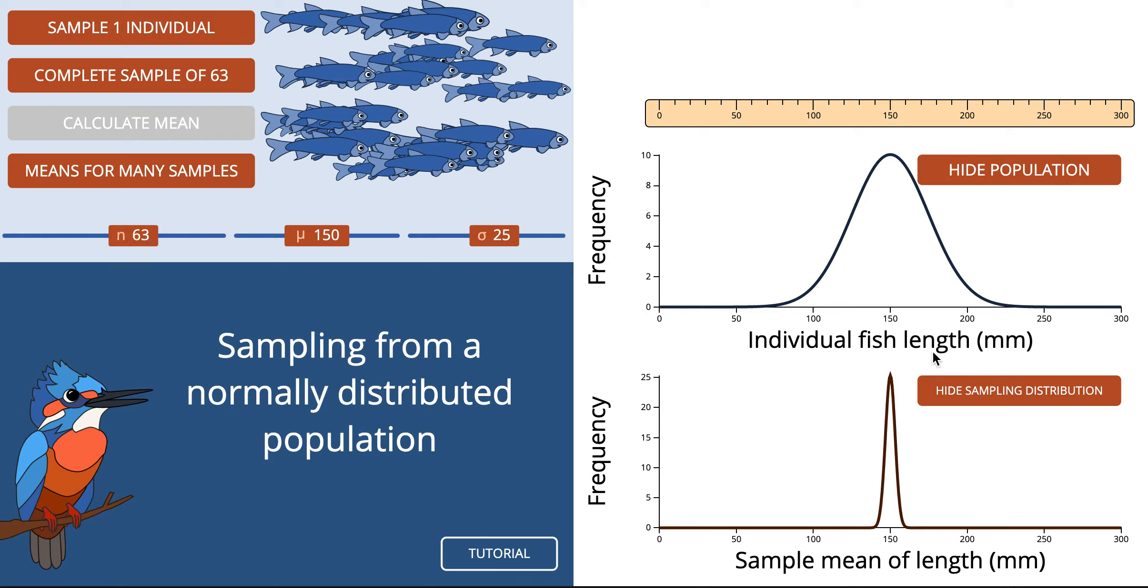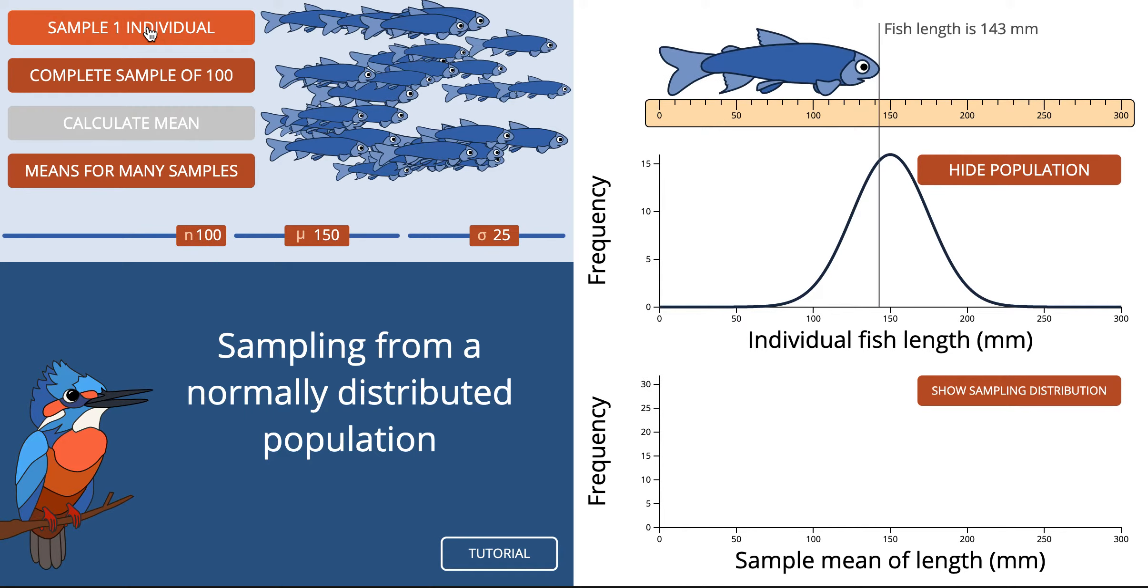Now if I change the sample size now to a hundred, and then if I went through the whole process again, there's that one fish, and there's another fish. So this is the same thing as before.